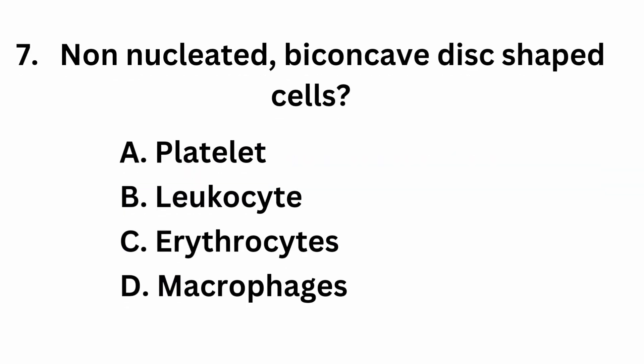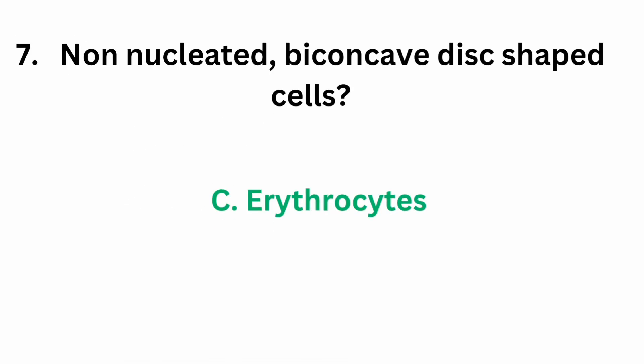Question number 7: non-nucleated, biconcave disc shaped cells. Option A, platelet. Option B, leucocyte. Option C, erythrocyte. Option D, macrophages. The correct answer is option C, erythrocyte, that is red blood cells.